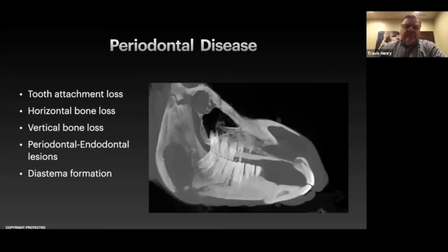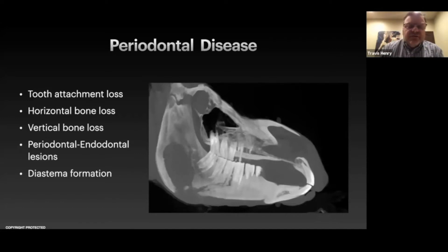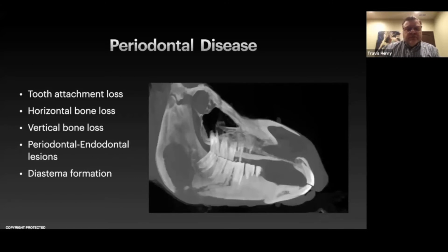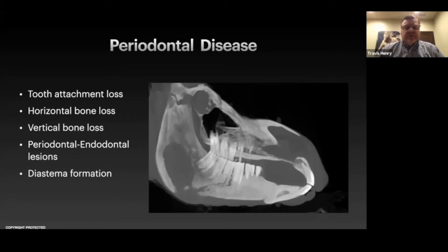Periodontal disease, just to review, is all of the things that have to do with the tooth's attachment in the alveolar bone. Our periodontal structures are the cementum of the tooth, the periodontal ligament, the alveolar bone, and the gingiva. The gingiva is not something we're going to be examining with CT — we'll use our clinical exam with a mirror or oral scope for that. But the other structures we can start to look at pretty closely.